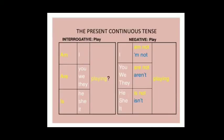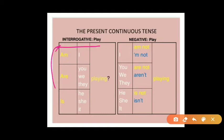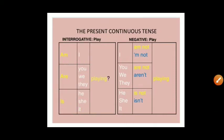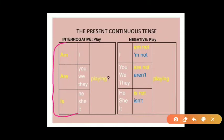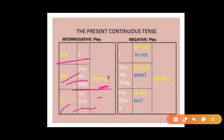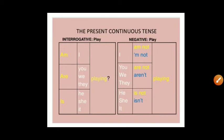Let's see the interrogative structure. In interrogative sentences, you put the helping verb before the subject. Before 'I' use 'am'; before 'you', 'we', 'they' use 'are'; before 'he', 'she', 'it' use 'is.' Then you add the verb first form with '-ing'. Examples: 'Am I playing?', 'Are you playing?', 'Are we playing?', 'Are they playing?', 'Is he playing?', 'Is she playing?', 'Is it playing?'